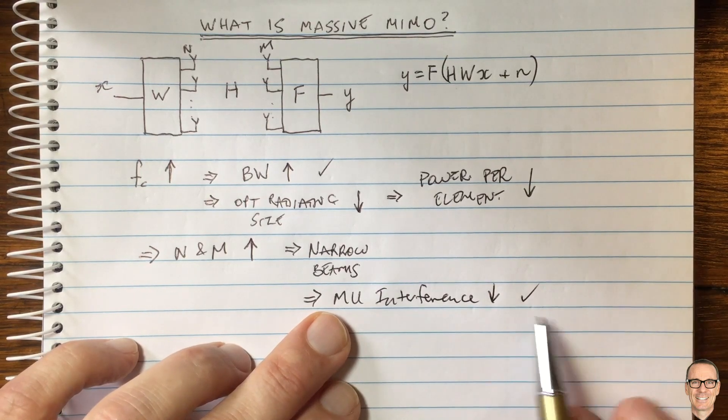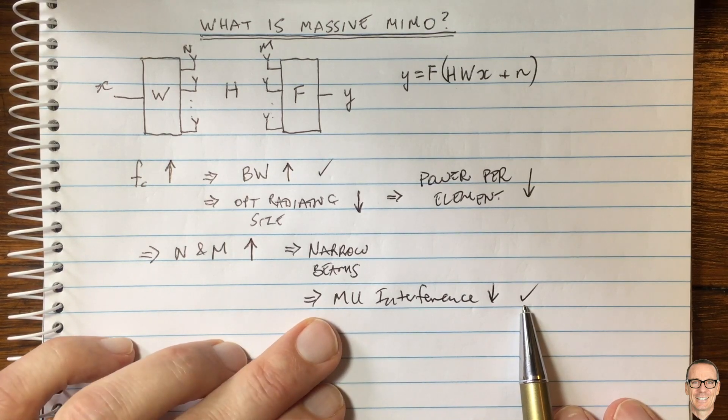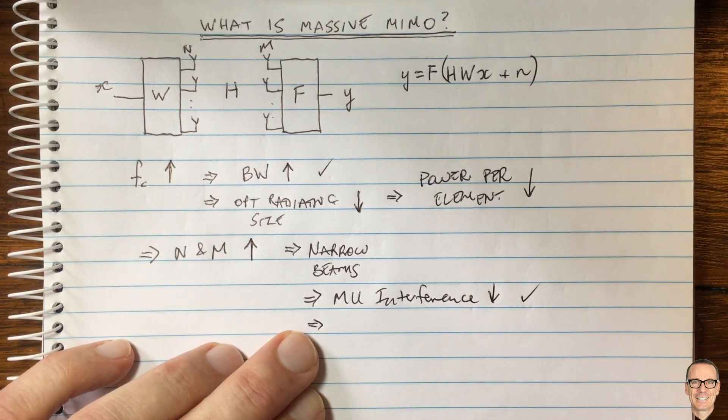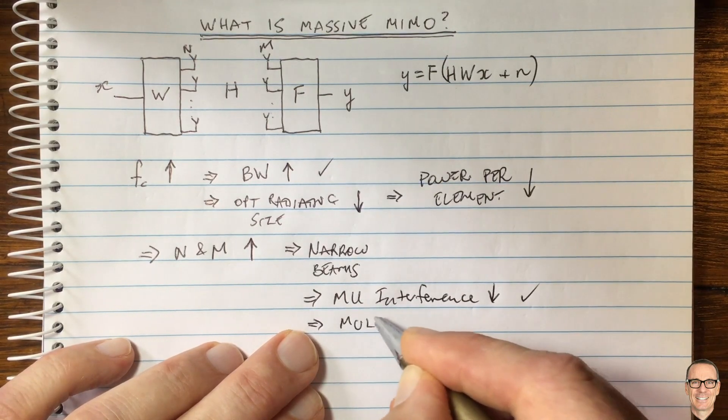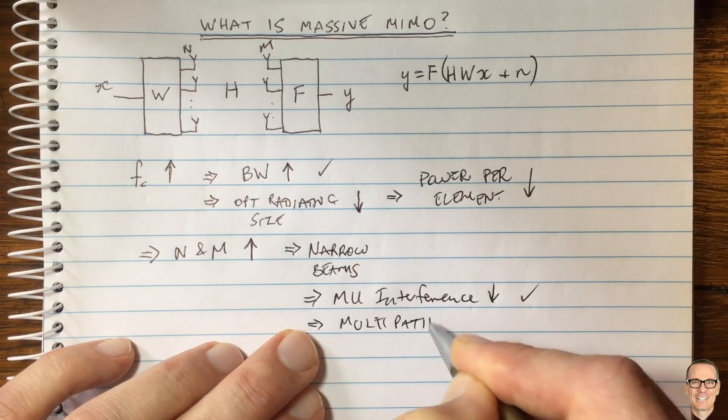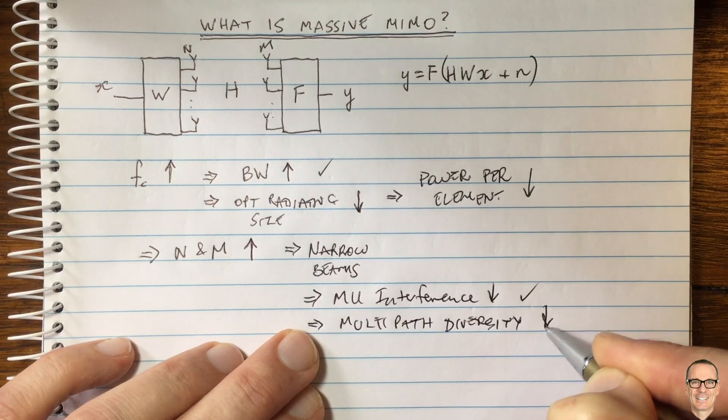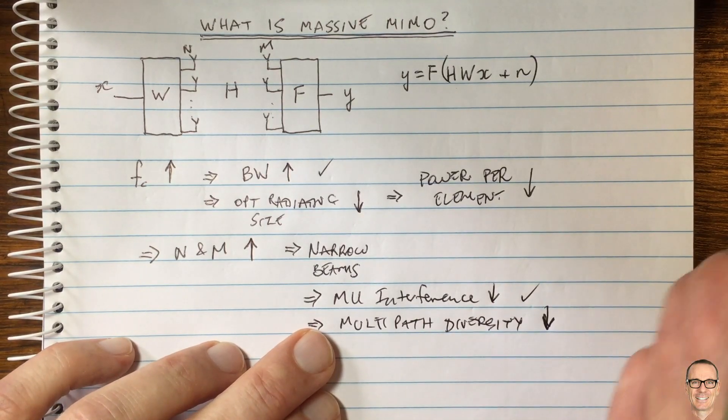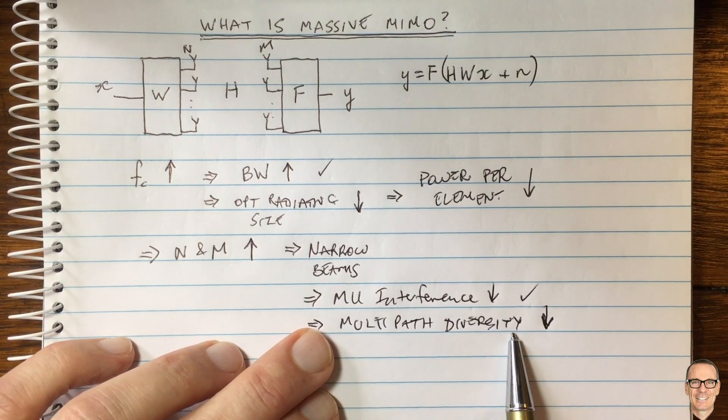It's all seeming good and positive, but you don't get something for nothing. The narrow beams also imply that multipath diversity comes down. Because as the beams are narrower, there's got to be more precisely bouncing off a particular wall in order to reach the same user to give diverse paths.